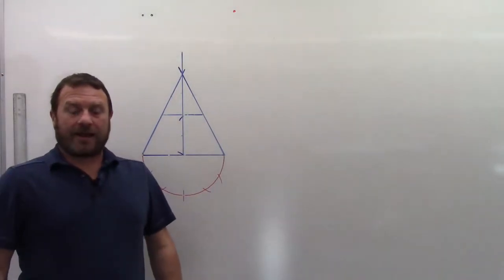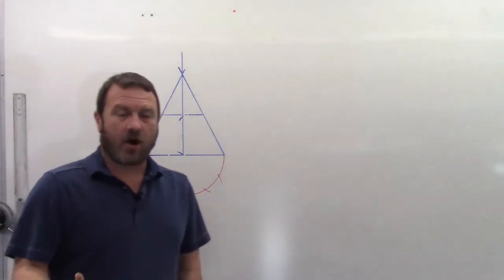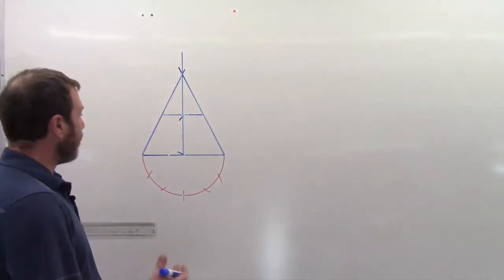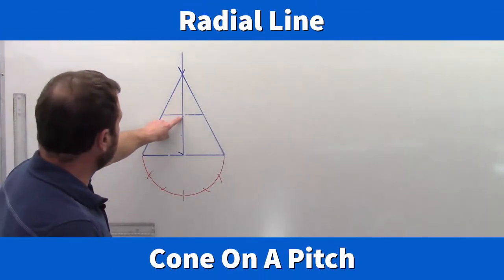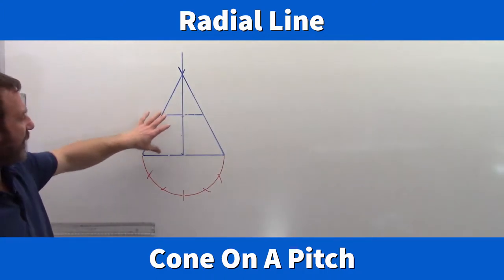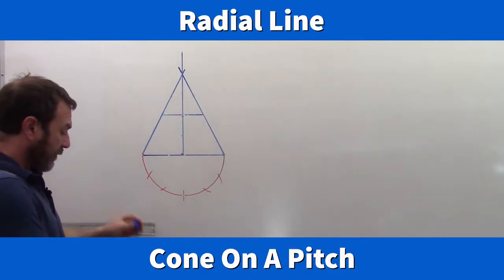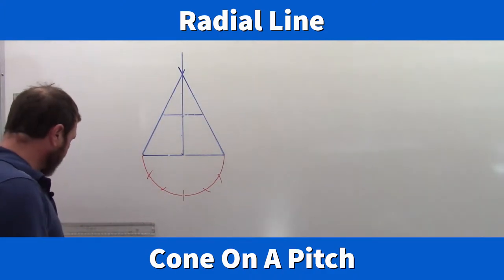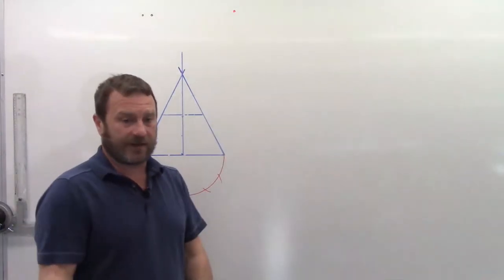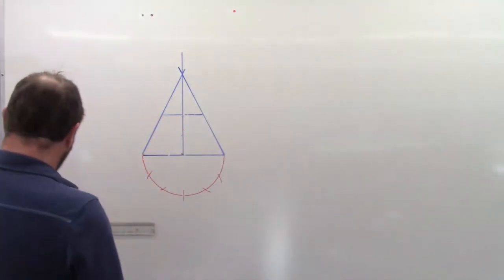Okay folks, we're going to look at our last one in radial line. And this really is as complicated as it gets for radial line at this point. We're going to look at the same frustum that we just looked at. So this would be like a roof jack or something like that, and it all starts off the exact same way as it did before.